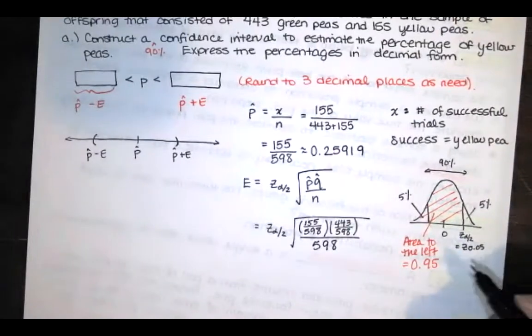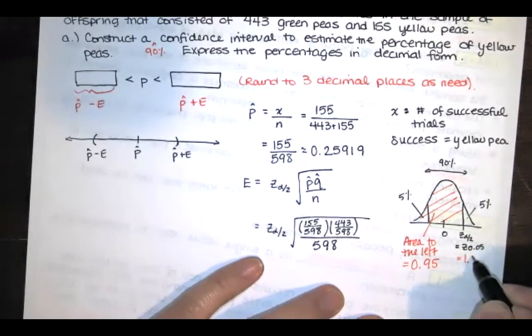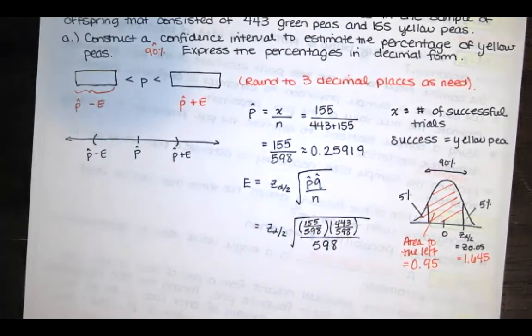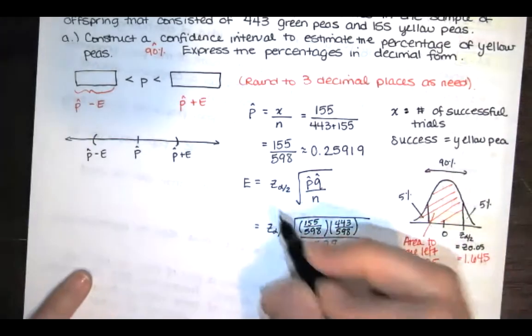So z sub 0.05 is 1.645. Let me make sure I wrote that down correctly. Yep. And so that's what I substitute in here.